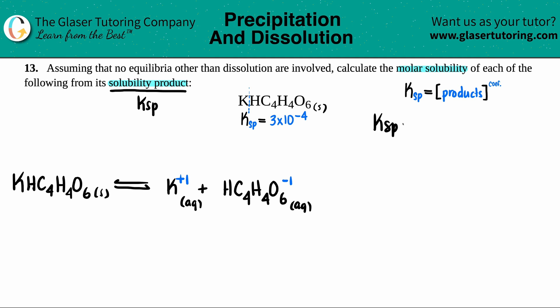So in this case, we have Ksp equals the concentration of the K plus one times the concentration of the HC4H4O6 minus one. And just be careful. We have to raise them to the coefficients. But in this case, I had only one potassium and one of the other things because there was no coefficient in front. So we could put raised to the first for both, but anything raised to the first is itself. Now we know the Ksp value. The Ksp is three times 10 to the negative fourth.